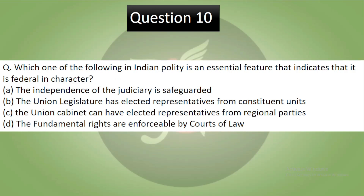Question 10: Which one of the following in the Indian polity is an essential feature indicating that it is federal in character? Options: the independence of judiciary is safeguarded; the union legislature has elected representatives from constituent units; the union cabinet can have elected representatives from regional parties; the fundamental rights are enforceable by courts of law.